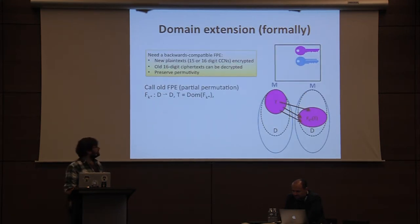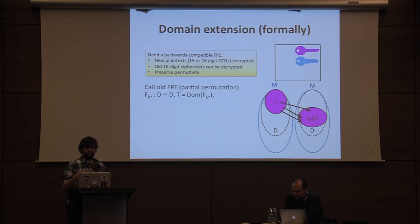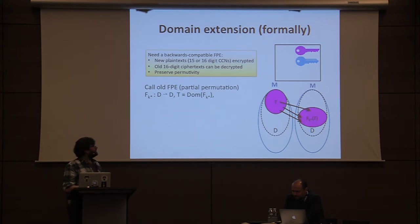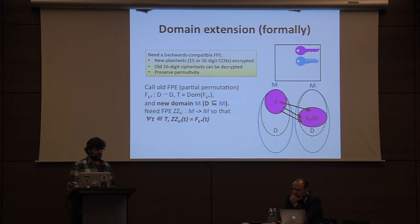Now for the domain extension setting. The goal is to encrypt points in the old set D and in the new extension set, while maintaining the ability to decrypt points that existed in D before the update, and while preserving permutivity over the whole set M. We call the old permutation F_K*, and the new domain M, where D is a subset of M.